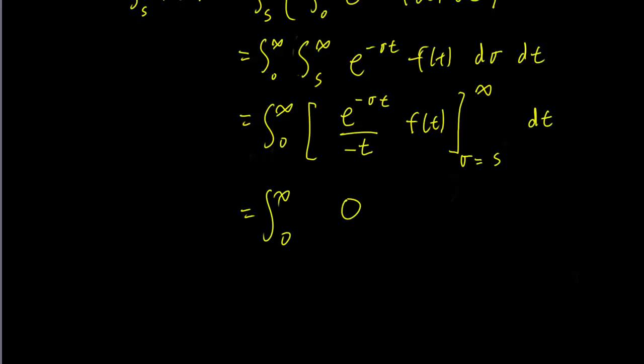That's the limit at infinity. And when we plug in s for the lower limit, this is going to be e minus st over minus t.